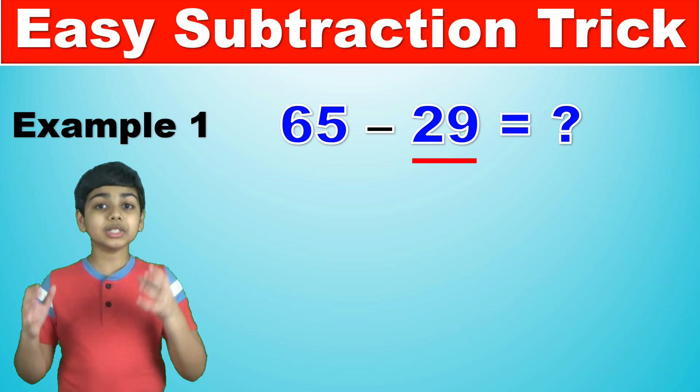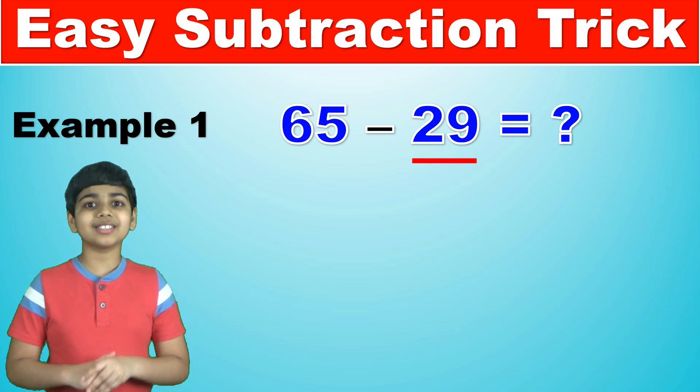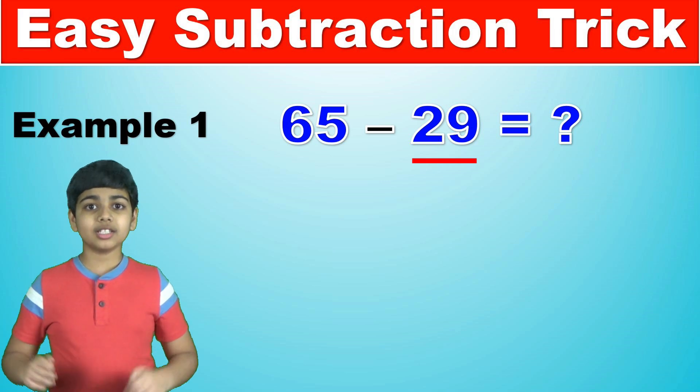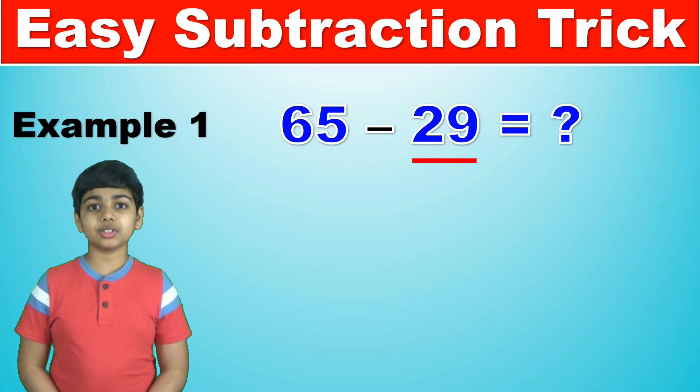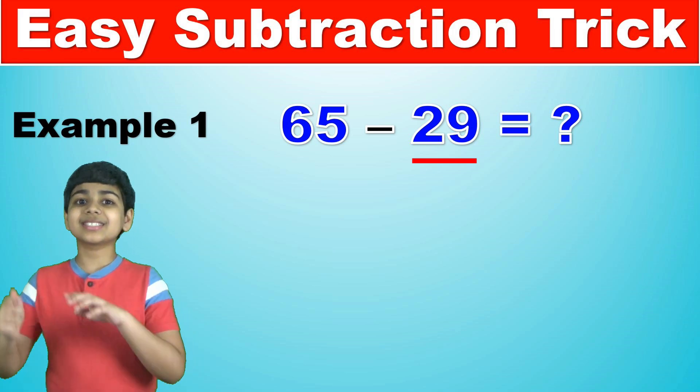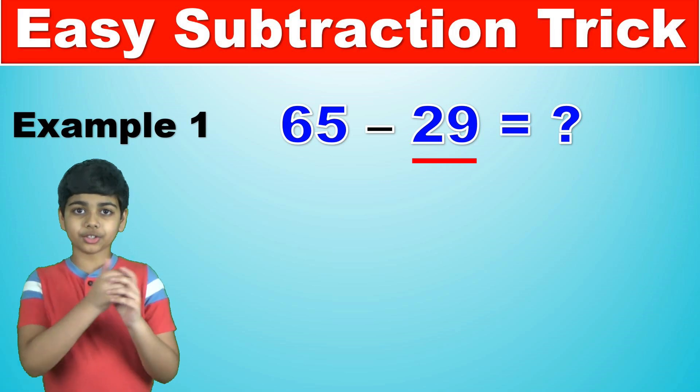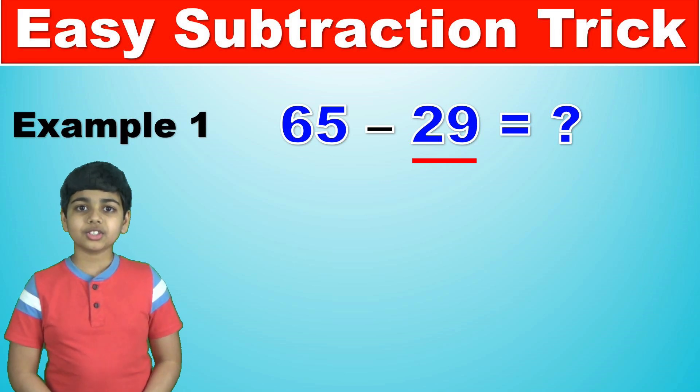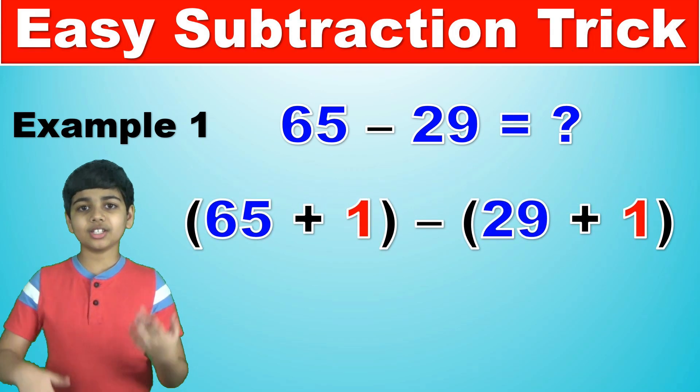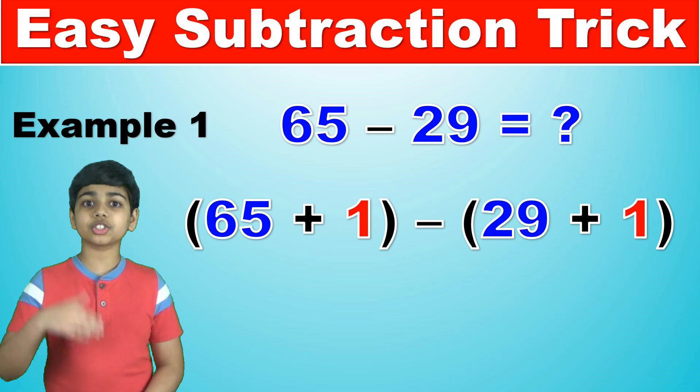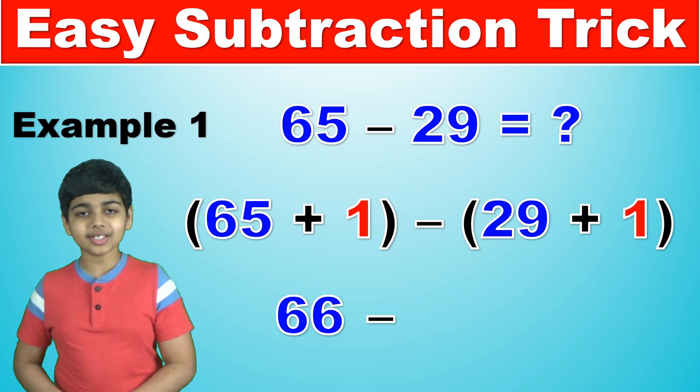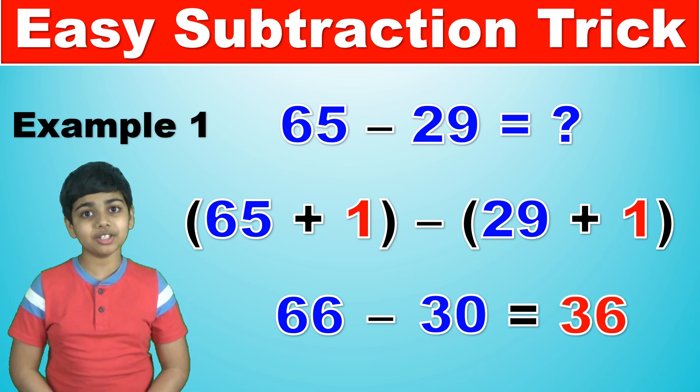So what we do now is find the difference between 30 and 29. The answer is 1. And so what we do is we not only add 1 to 29, but we add 1 to 65 as well, the other number in our equation. So now we have 65 plus 1, which is 66, and 29 plus 1, which is 30. So 66 minus 30 is 36.